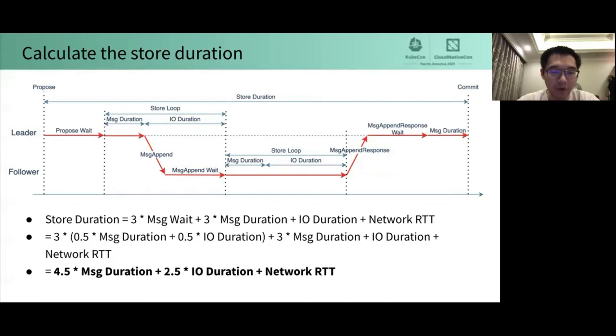The duration time of a message append and a message append response is equal to network roundtrip time, RTT for short. After the network RTT and message wait are substituted into the equation, the store duration is equal to the sum of 4.5 message duration, 2.5 IO duration, and 1 network RTT. Let's take a good look at this equation. Is there something unexpected?